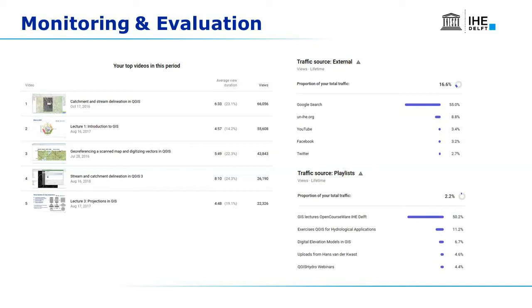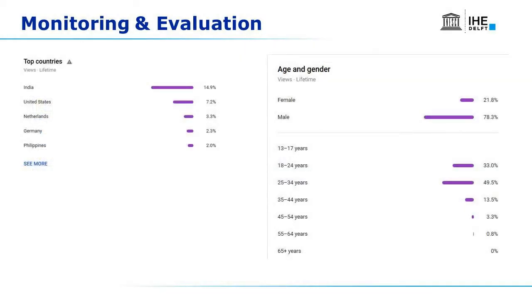You can also see the performance of playlists — the most popular are the theoretical lectures. Digging into the analytics further, most visitors over the whole channel lifetime come from India, then the United States, then other countries. The gender balance is not ideal — most viewers are male. Based on this, we can say most viewers are Indian males around 25 to 34 years old — quite useful information about your target group.